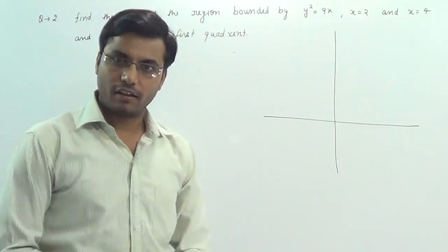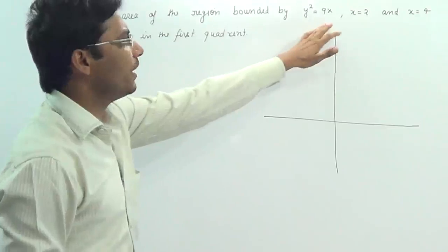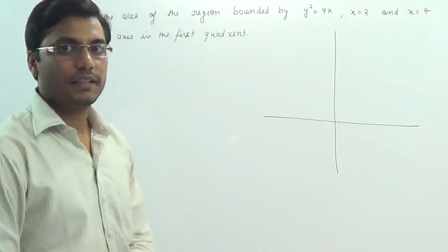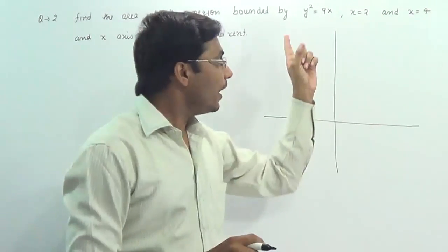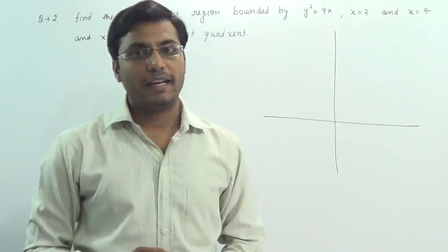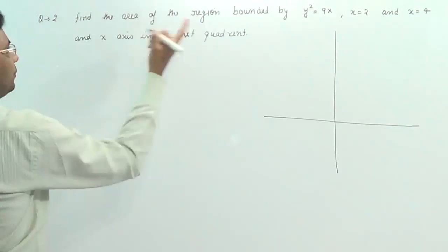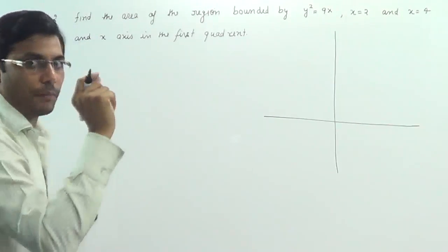To find this area, first we will draw the graph. The first equation is y² = 9x. In class 11th chapter on conic sections, we learned that y² = 9x is the equation of a parabola. Using the definition of parabola, first we will find some points so we can draw it easier.